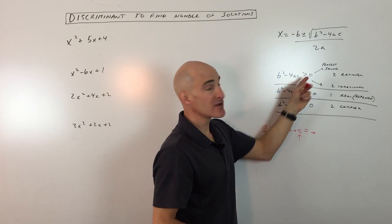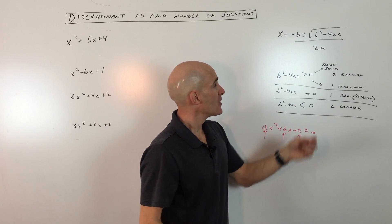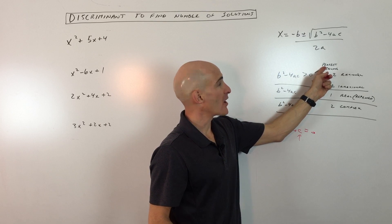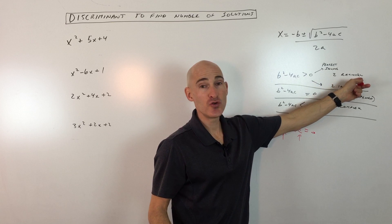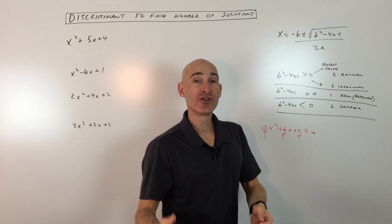When you calculate this, if it's greater than zero, meaning that it's positive, you then want to evaluate, is it a perfect square, like 4, 9, 16, 25, 36? If it is, then you're going to have two real rational solutions.